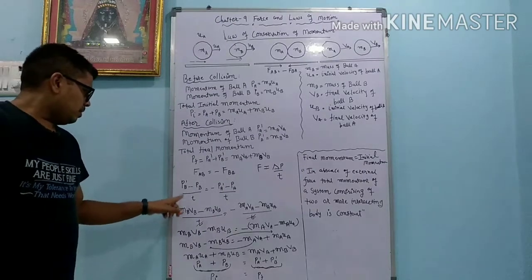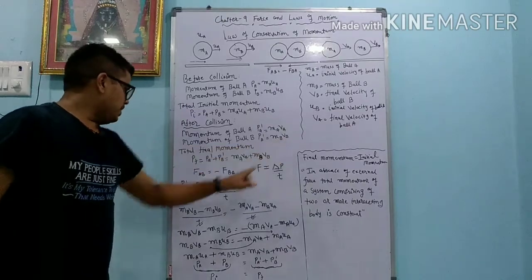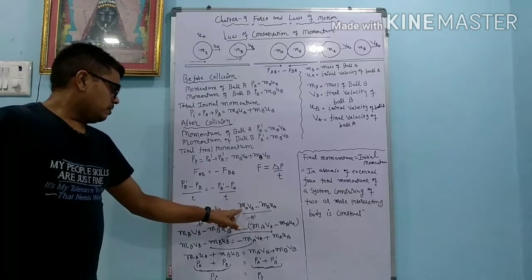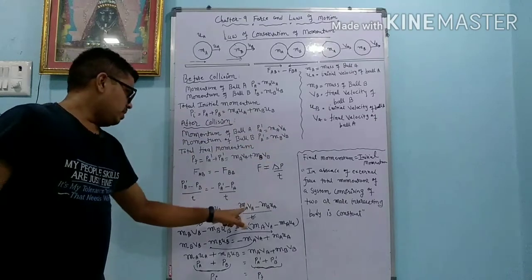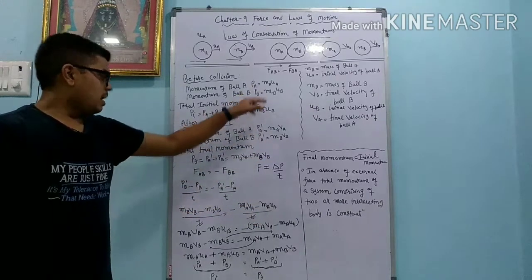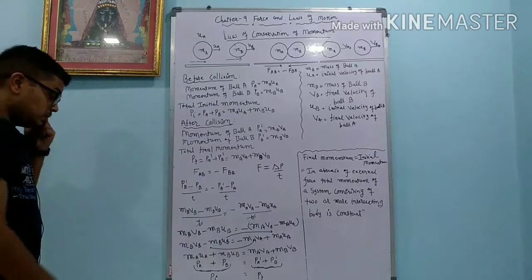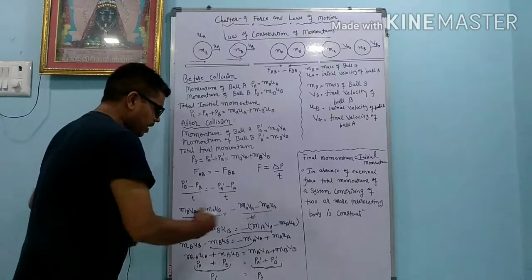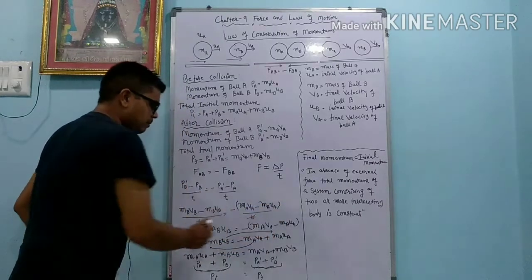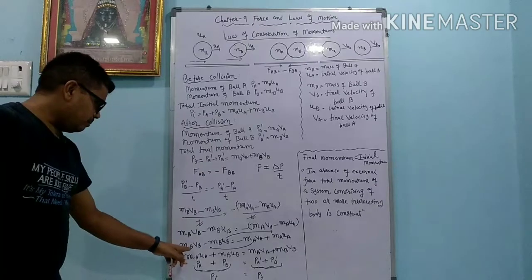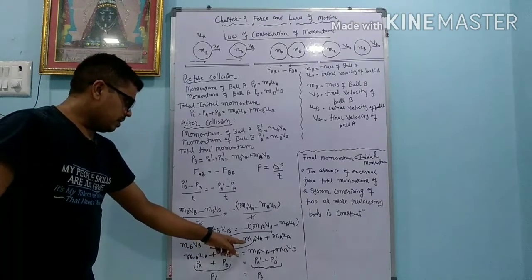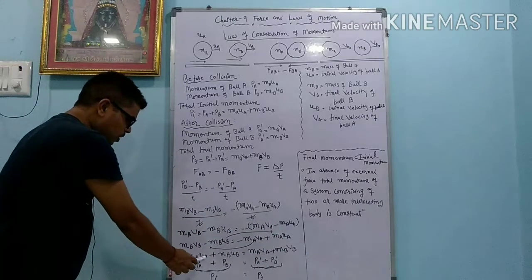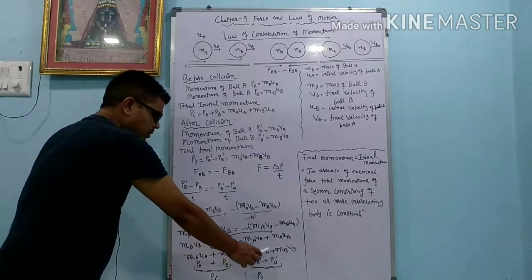Now, instead of PB dash we write MB·VB, and instead of PB we write MB·UB, minus PA dash we write MA·VA, minus PA we write MA·UA, divided by T. T is cancelled. So we get MB·VB minus MB·UB equals to minus (MA·VA minus MA·UA). Opening the bracket: MB·VB minus MB·UB equals to minus MA·VA plus MA·UA. Changing sides, we get MA·UA plus MB·UB equals to MA·VA plus MB·VB.